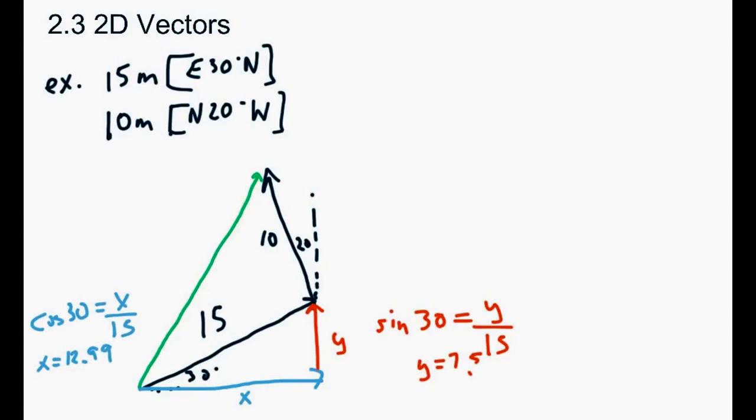So 12.99. So we've got our two sides of that initial triangle. Let me write those in there. So we have 12.99 to the east, and then our vertical component was 7.5 to the north. Okay, so now what we want to do is basically repeat the exact same thing using the second triangle.